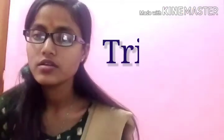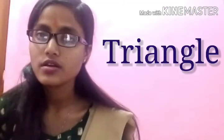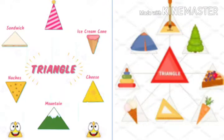Now, triangle. Triangle — traffic light, pizza slice — यह triangle के shape का होता है. इसमें तीन sides होते हैं.